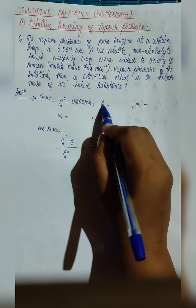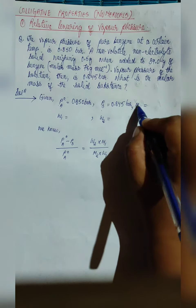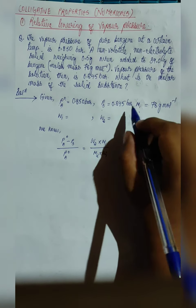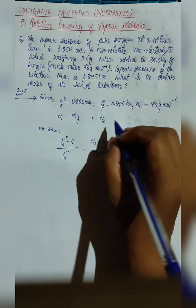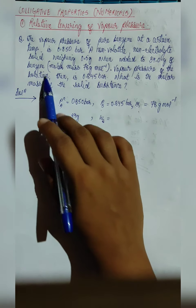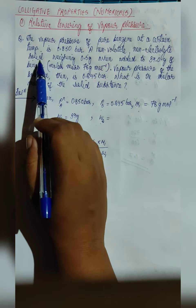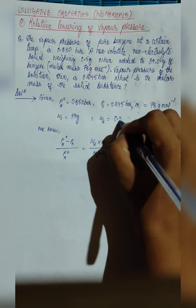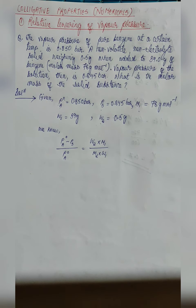P_S, the vapor pressure of the solution, is given as 0.845 bar. The molar mass of benzene is given as 78 gram per mole, and the weight of benzene is given as 39 gram. W2 is the weight of the solid, given as 0.5 gram. Here we are indicating benzene as 1 and the solid as 2. This is the formula for relative lowering of vapor pressure whenever we are trying to find the molecular mass of any substance.